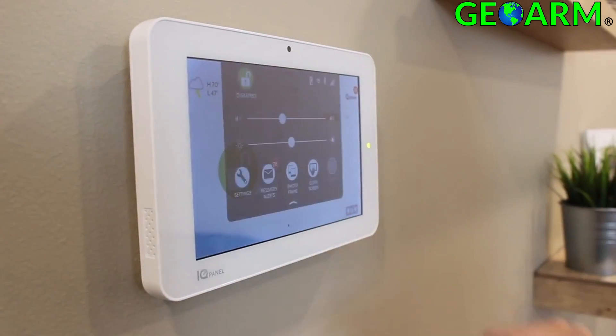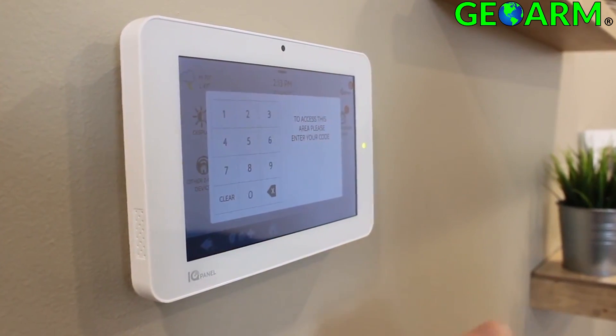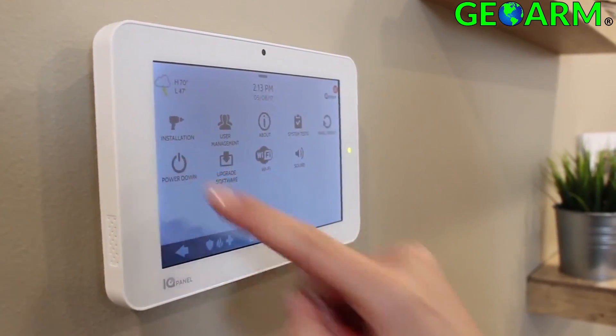The first thing we want to do is power down the panel. From the drop-down menu, select Settings, Advanced Settings, enter your installer code, and then press Power Down.